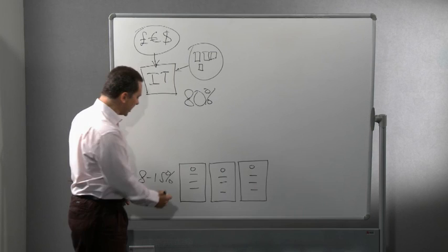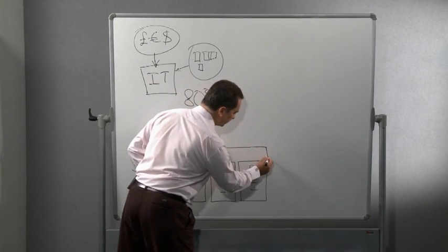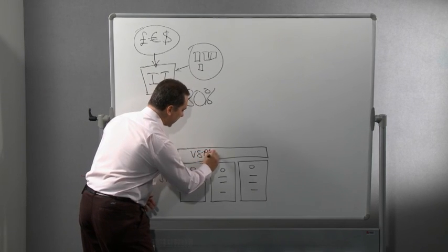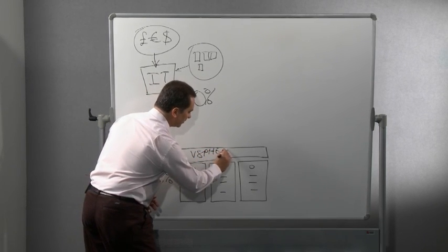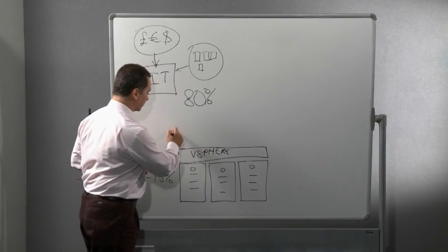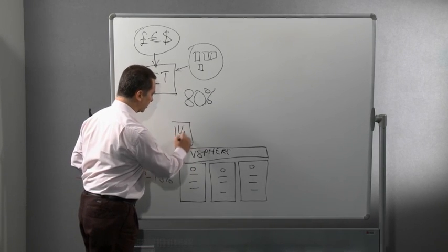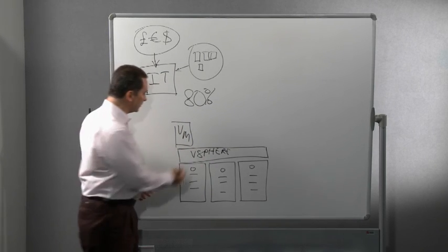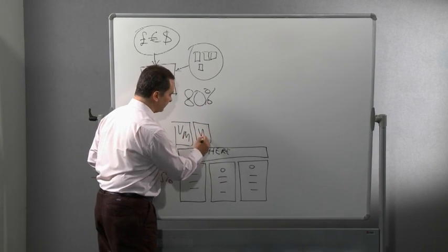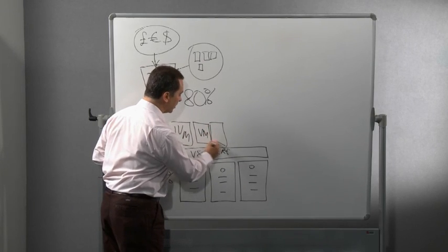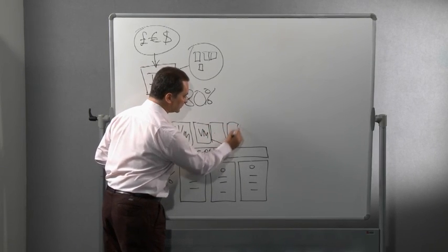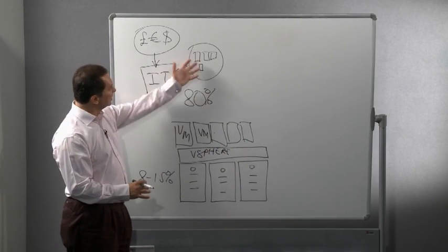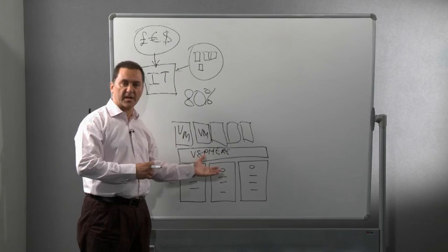So how does virtualization help? Well, what virtualization does is it places over the servers a layer of software that allows you to run multiple virtual servers which we call virtual machines. So on an infrastructure where you have three physical servers, for example, you could have 10, 15, 20, perhaps even more virtual machines running on this infrastructure supporting a greater number of applications to help your users access their information and their data.